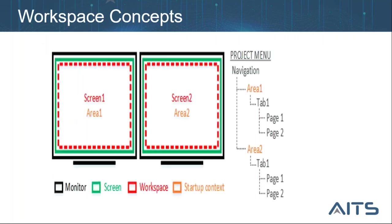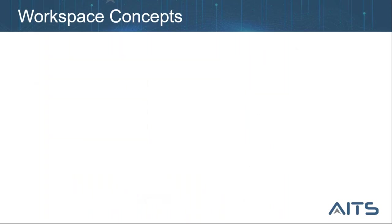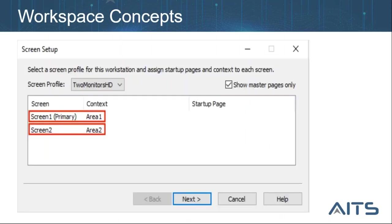Inside the screen profile we have the workspace, which is the engine that manages the contextual content changes. A startup context is set for each workspace by linking each screen to a level one menu item in the project menu named navigation. Area one is a level one item, tab one is level two, and pages one and two are level three items. A startup context is set for each screen via the screen setup page of the computer setup wizard.